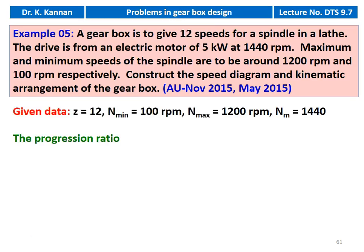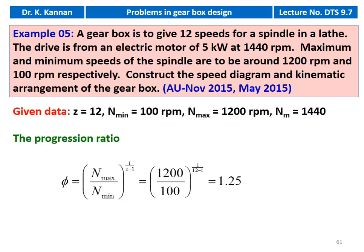We write down the given data. The number of steps Z equals 12, minimum speed 100 RPM, maximum speed 1200 RPM, and motor speed is 1440 RPM. Then we calculate the progression ratio: φ equals N_maximum divided by N_minimum to the power of 1 divided by (Z minus 1), which gives 1200 divided by 100 to the power of 1 by 11, equal to 1.25.